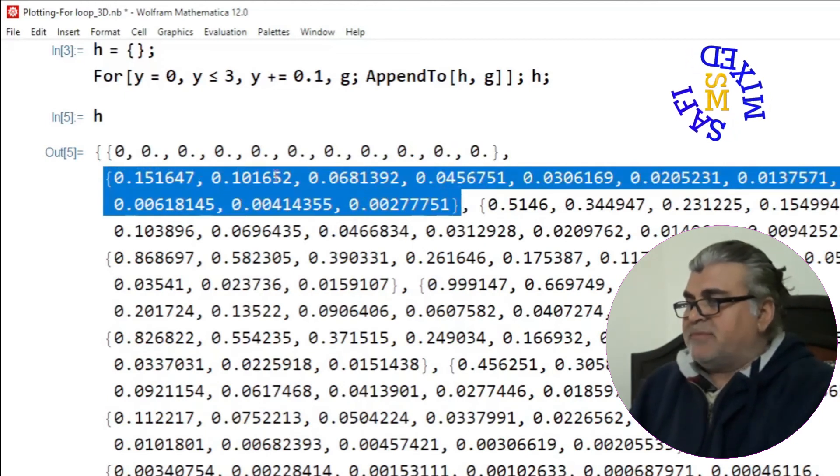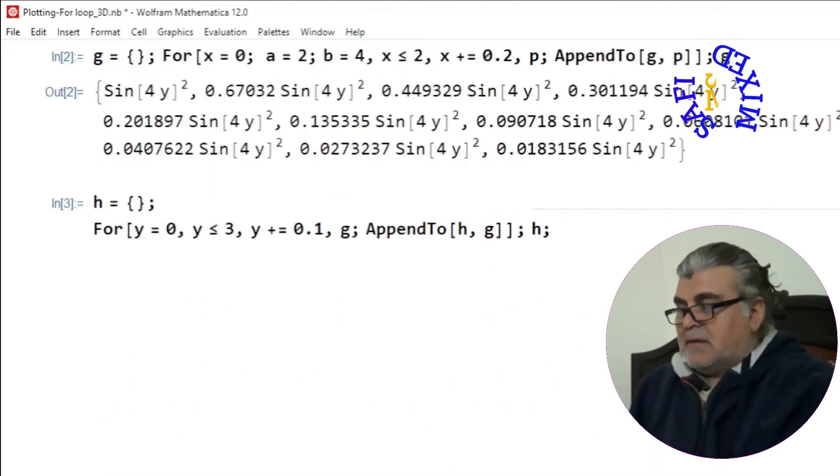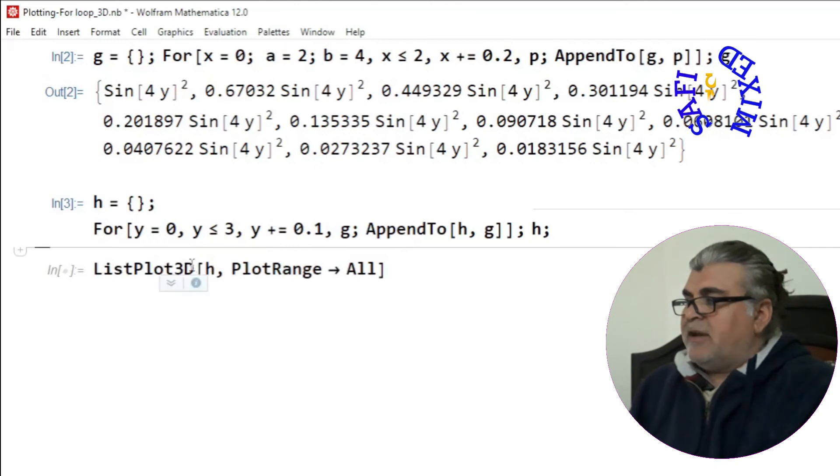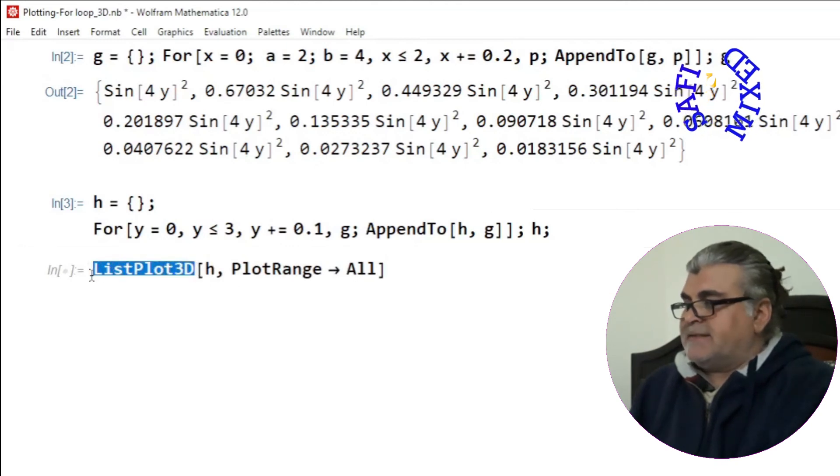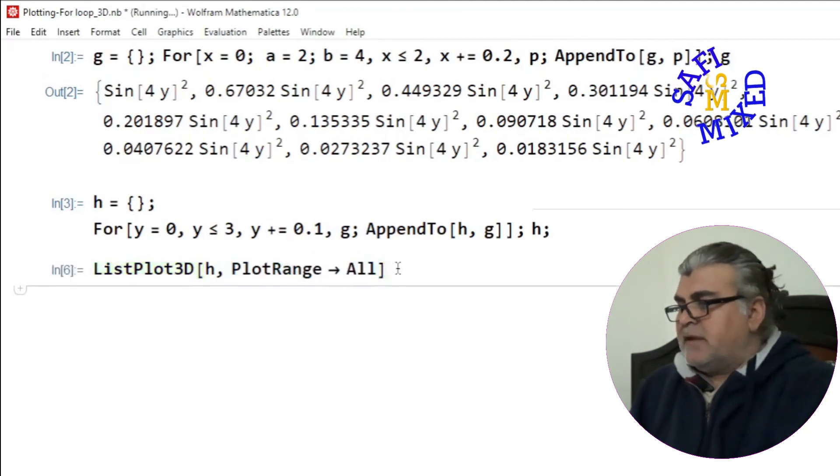So I first delete this. Now I want to plot the value of h through the command ListPlot3D. I'm feeding h as the argument to ListPlot3D and ask Mathematica to plot it for the whole range. If I run this, I'll get the required form of the data.